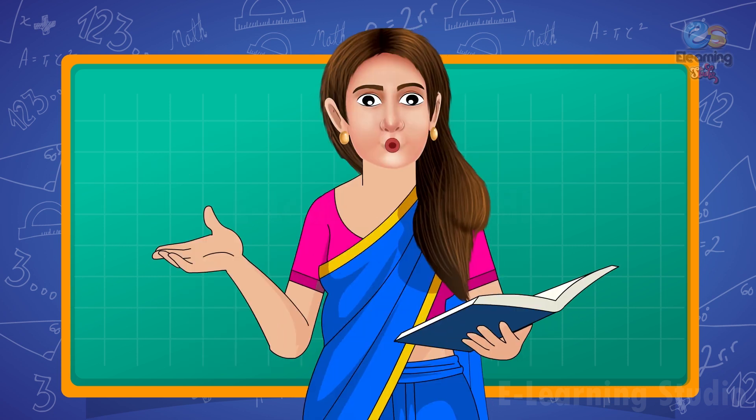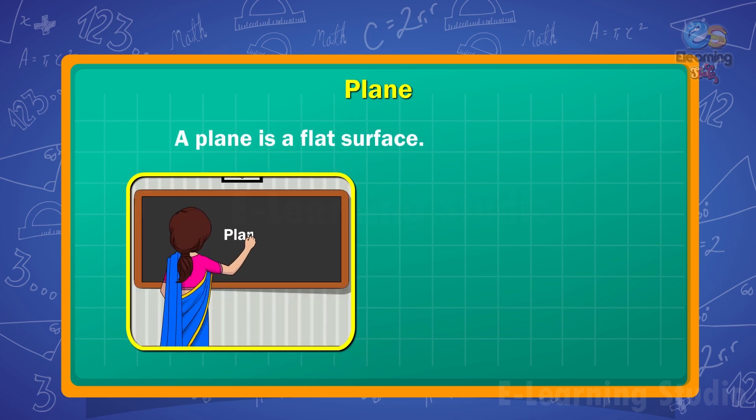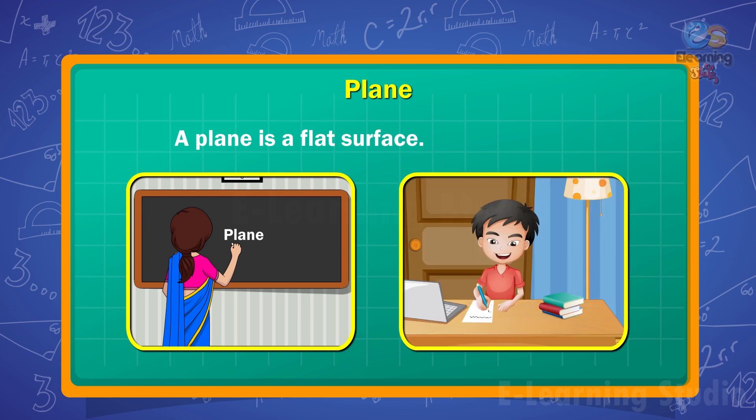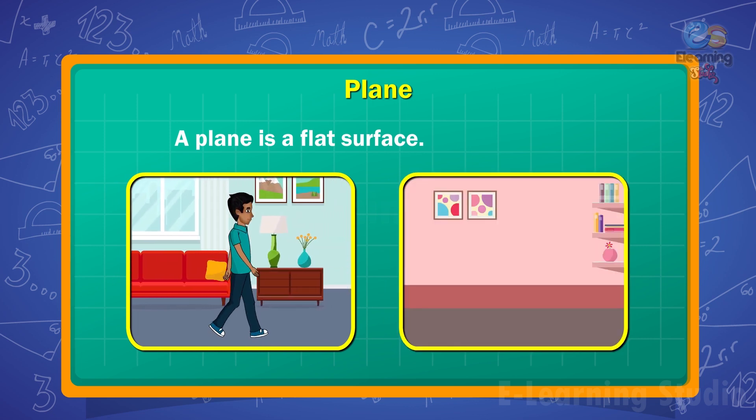Now move to the next which is plane. A plane is a flat surface. The teacher writes on the blackboard which is a plane. The students work on the plane of the paper in their notebooks. We walk on the plane of the floor. The plane of the wall is vertical.